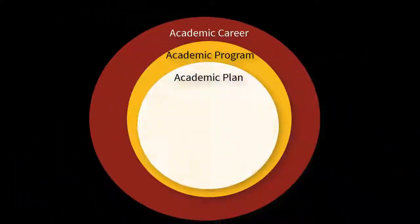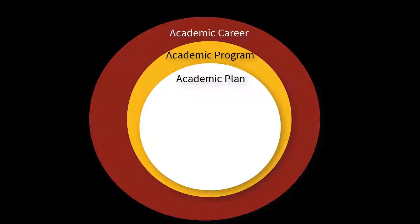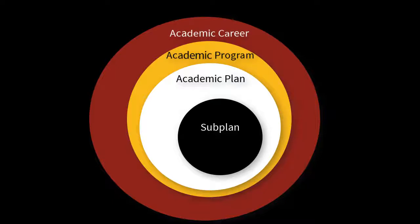Think of the Academic Career, Program, and Plan as three concentric circles. Each instance of an Academic Career includes an Academic Program. Within each Academic Career and Program, there may be a Subplan as well.